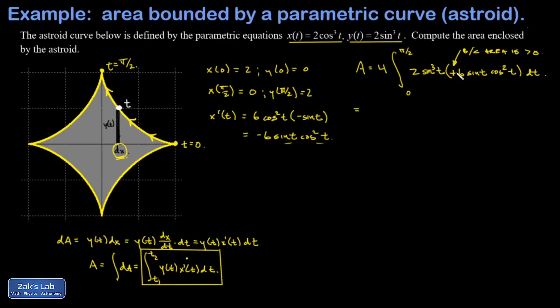Pulling out the constants: multiplying 4 × 2 × 6 gives 48. But after accounting for the sign fix, we factor out 48 in front, and inside we have sine to the fourth power times cosine squared — a pretty nasty integral since all powers are even.